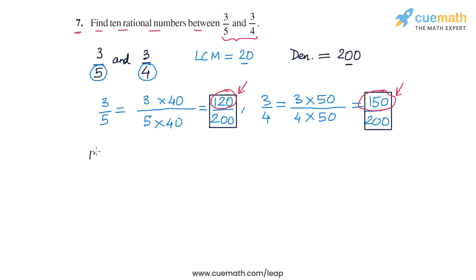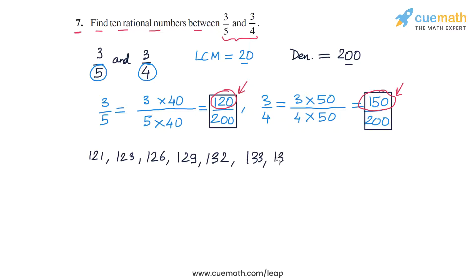Let's pick any 10 integers at random: 121, 123, 126, 129, 132 — that's five integers — then 133, 137, 140, 141, and 149. I have picked 10 integers at random between 120 and 150.